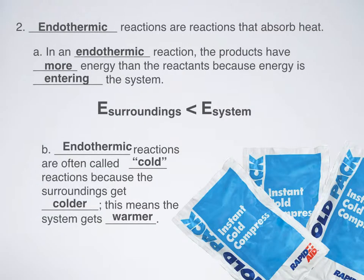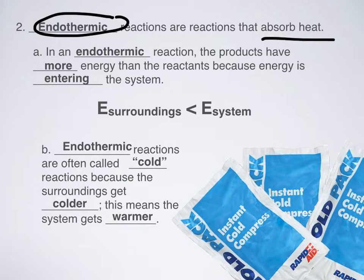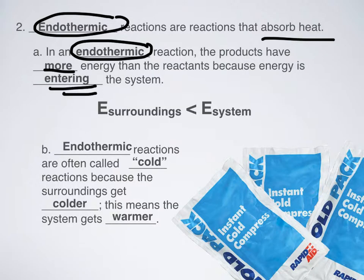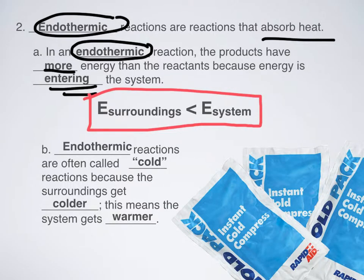Let's talk about the opposite: endothermic reactions. 'Endo' means inside. Endothermic reactions are the exact opposite — they absorb heat. That's the same definition from unit 12. In an endothermic reaction, the products have more energy than the reactants because energy is entering the system. We have this delicate balance: the surroundings are going down in energy, and the energy in the system is going up.